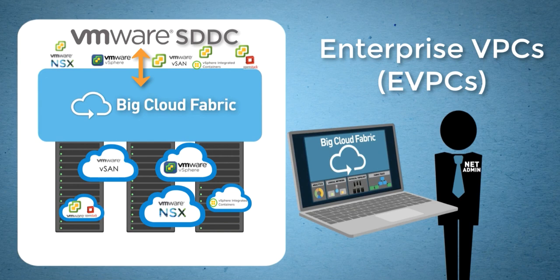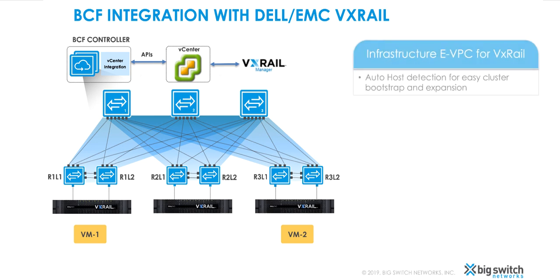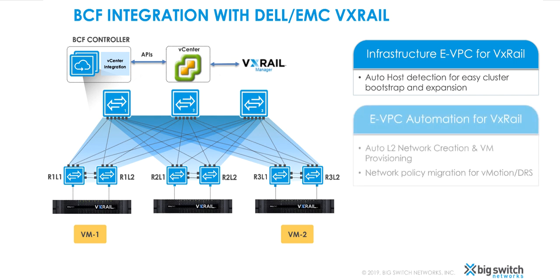If communication is desired between the eVPCs, eVPC peering can be established. Big Cloud Fabric provides an infrastructure eVPC for VxRail that greatly simplifies VxRail cluster bootstrapping and expansion. By auto-detecting the VxRail nodes, Big Cloud Fabric provides the flexibility of connecting VxRail nodes anywhere in the Fabric. As port groups are created and VMs are provisioned in vCenter, fabric automation auto-provisions the logical networks, thus simplifying network provisioning.